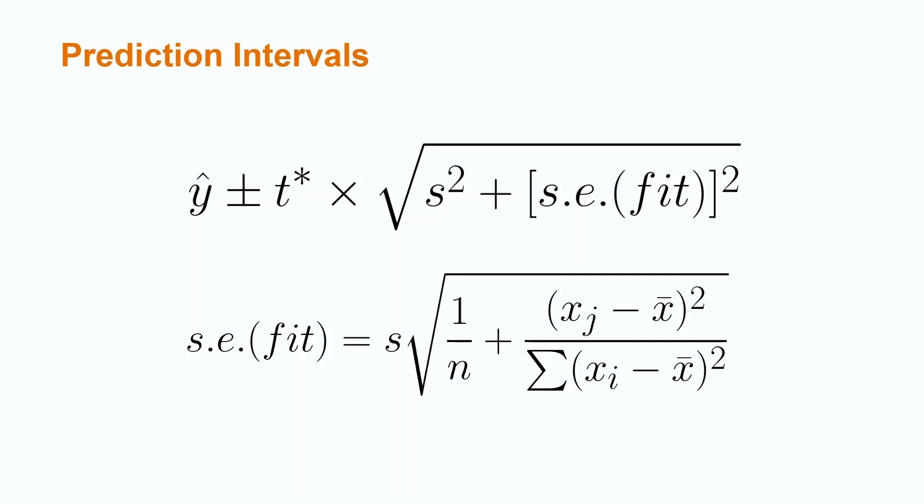The formula y hat plus or minus t star times the square root of the sample standard deviation squared plus the standard error of y hat squared gives our prediction interval. Note that the formula for the standard error of y hat is the sample standard deviation times the square root of one over n plus x sub j minus x bar squared over the sum of x sub i minus x bar squared. Because this formula is cumbersome we will use Minitab's prediction interval feature, however a different statistical software of choice can be used as well if it has a prediction interval feature.